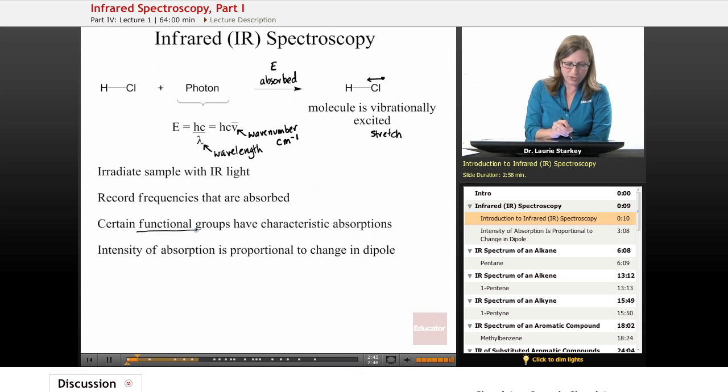Because it turns out that certain functional groups have characteristic absorptions. So if you have, for example, an OH group in your molecule, OH groups absorb a certain wavelength of infrared light. And so if we see an absorption at that wavelength, it tells us that our molecule has an OH group on it. So IR analysis is a way for analyzing for functional groups.